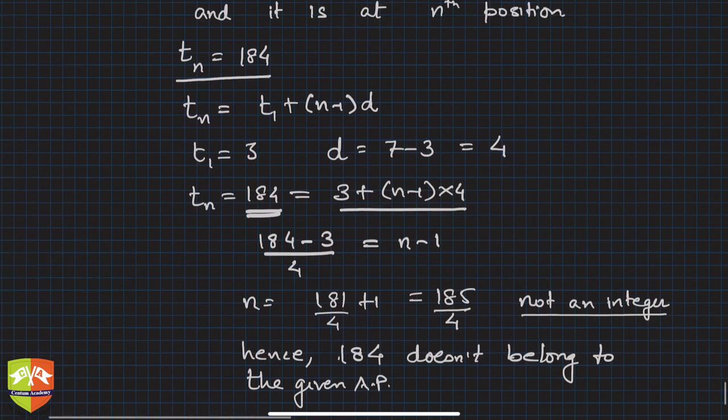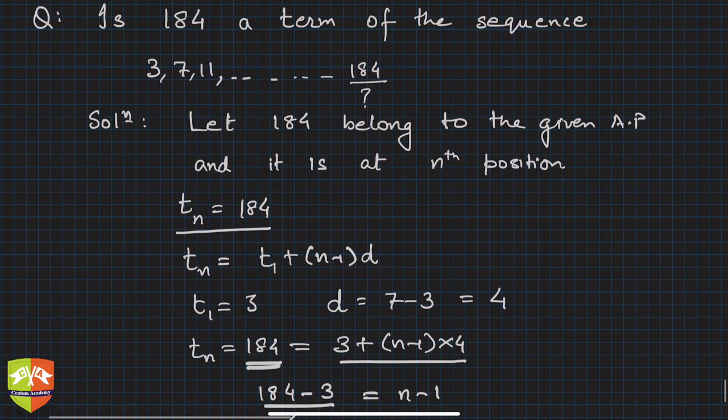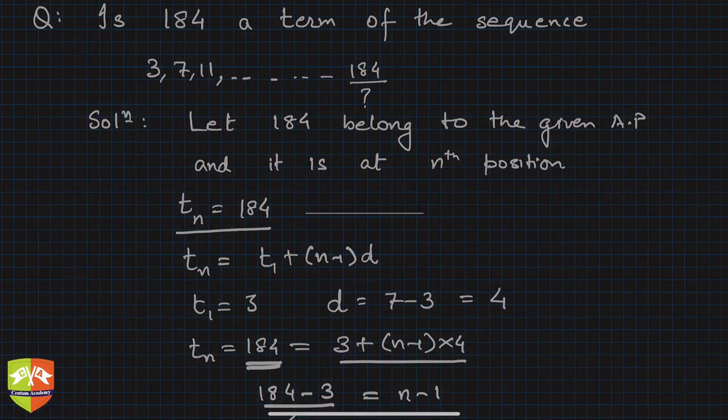So what is the learning? If someone is asking you to find out whether a particular term is part of a given AP or not, then try to show that it exists at an nth position and try to find out n from the given conditions and data. If n happens to be a positive integer, then that particular term definitely belongs to the AP, otherwise not. This is how you can solve this problem.